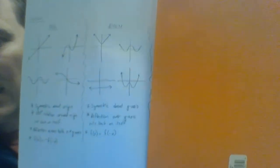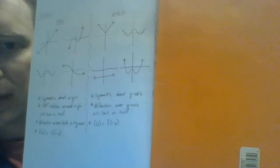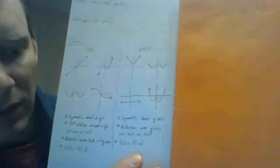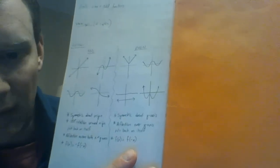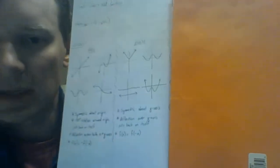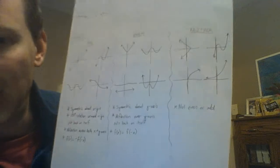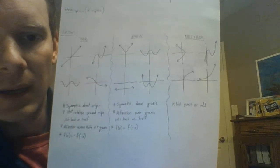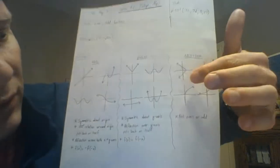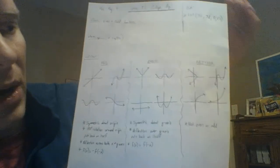For even functions, they are symmetric about the y-axis. Reflecting over the y-axis lands exactly on itself, which means f(x) = f(−x) — changing the input to negative x gives the same function. For neither, any function that doesn't fall into one of the first two categories is automatically neither. You could have symmetry about the x-axis, but that doesn't count — it's only y-axis symmetry that makes a function even.